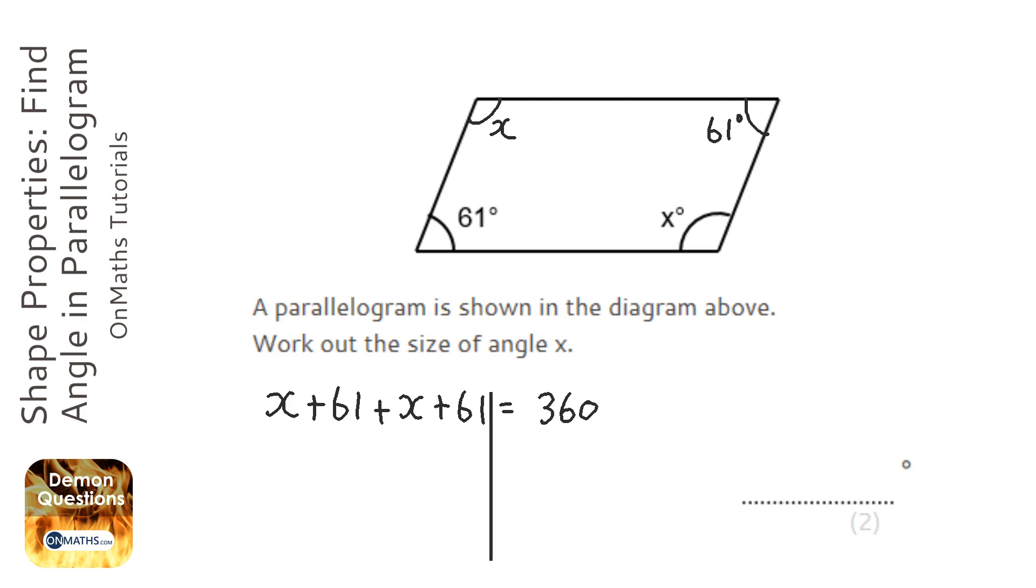So if we put our lines down, and if we add the x and the x together, we get 2x. If we add the 61 and 61 together, we get 122 equals 360.